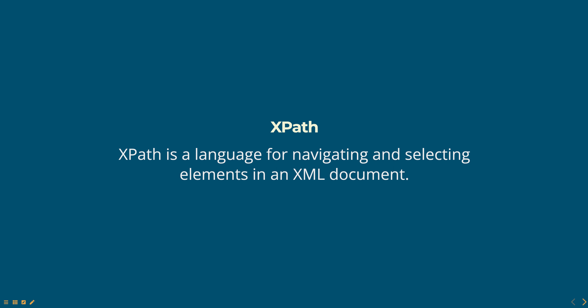XPath provides a set of expressions that can be used to select elements based on their name, attributes, and position in the document. XSLT and XPath are used together to create XSL stylesheets, which define the transformation rules for a specific XML vocabulary or application. By using XSLT to transform XML documents, companies and organizations can ensure that their data can be easily displayed or used in a variety of different formats and systems.